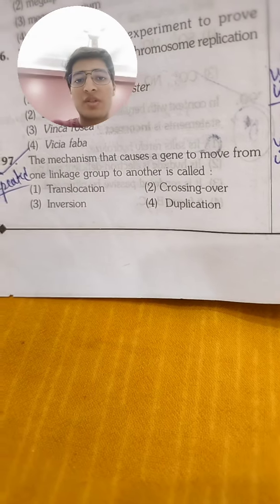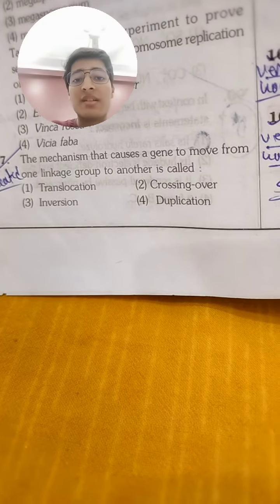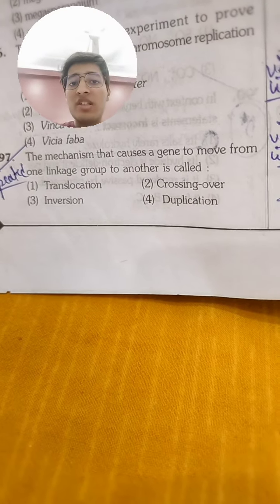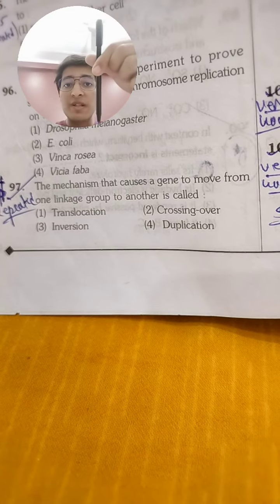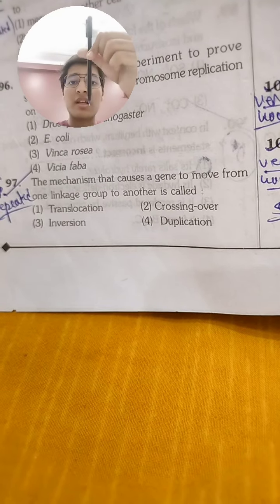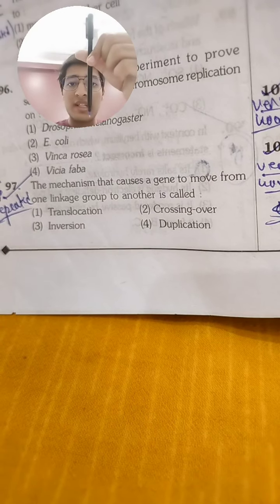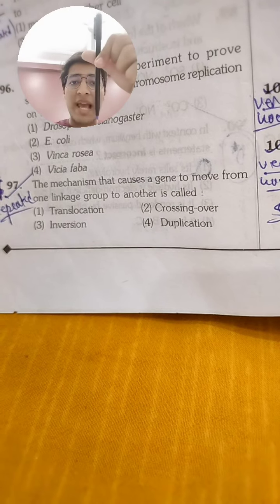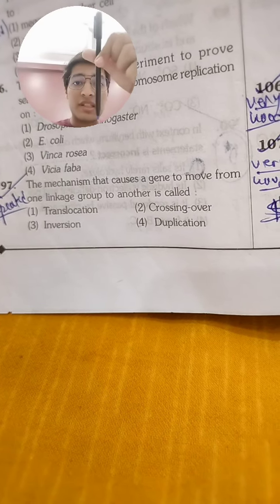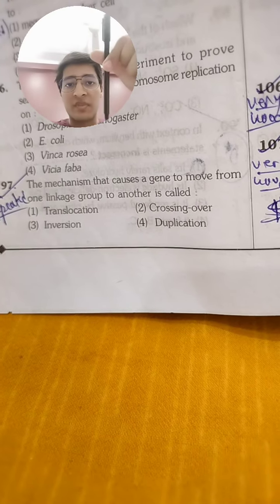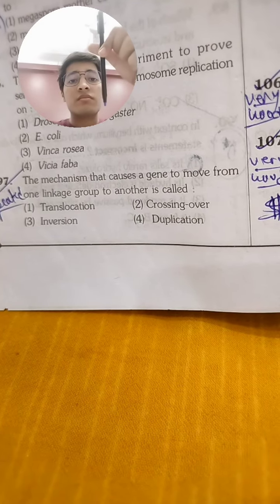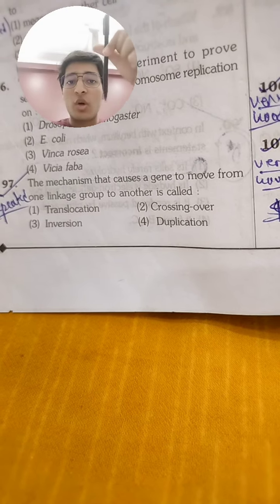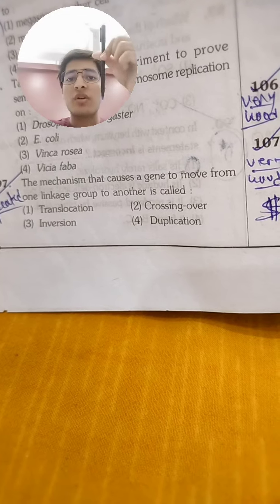The first thing that comes to mind is: what does the term 'linkage group' mean? A linkage group is all the genes present on one chromosome. Suppose this pen is a chromosome — all the genes present on this pen form a linkage group. The black color of the pen represents genes on the chromosome. So all the genes present on one single chromosome are termed as a linkage group.